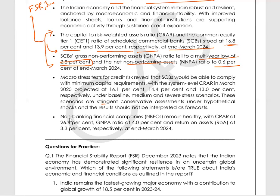Non-banking financial companies remain healthy with CRAR at 26.6%, GNPA at 4%, and return on assets at 3.3%. Now let's discuss some questions based on this report.